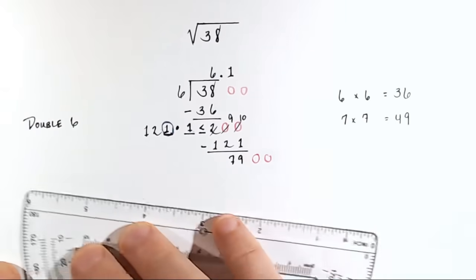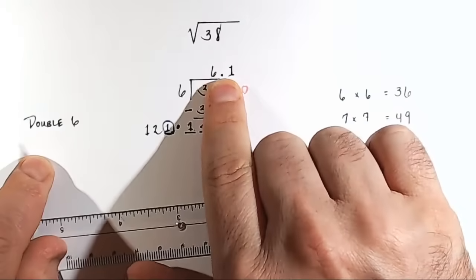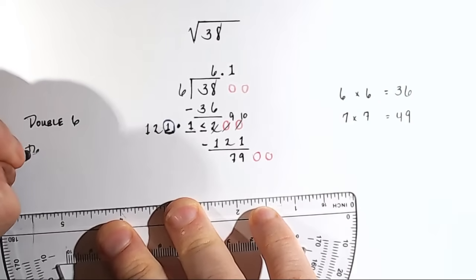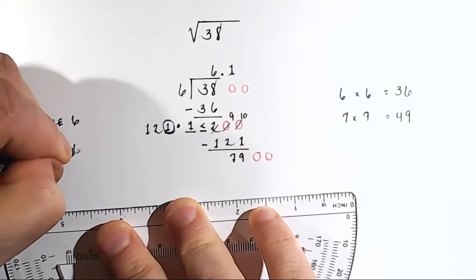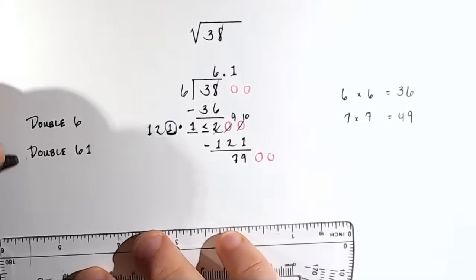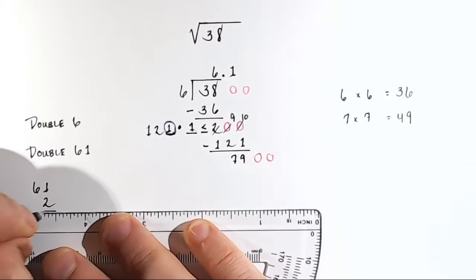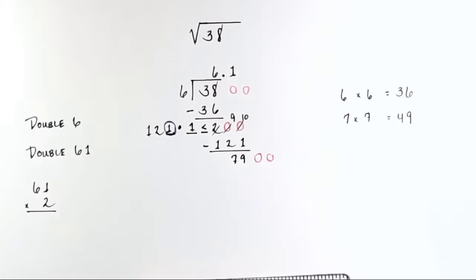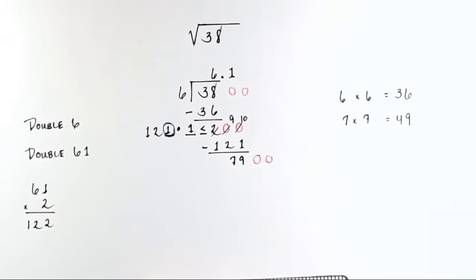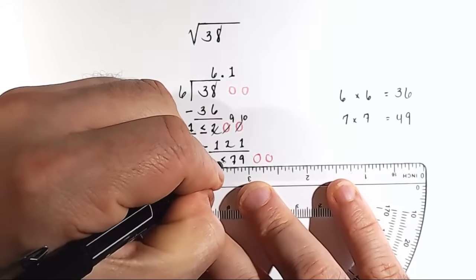Here's the trick. You've got 6.1, and I want to remove the decimal place. So we're going to double 61. Okay, what is the double of 61? Well, that would be 61 times 2. All right, so that is 2 and 12.